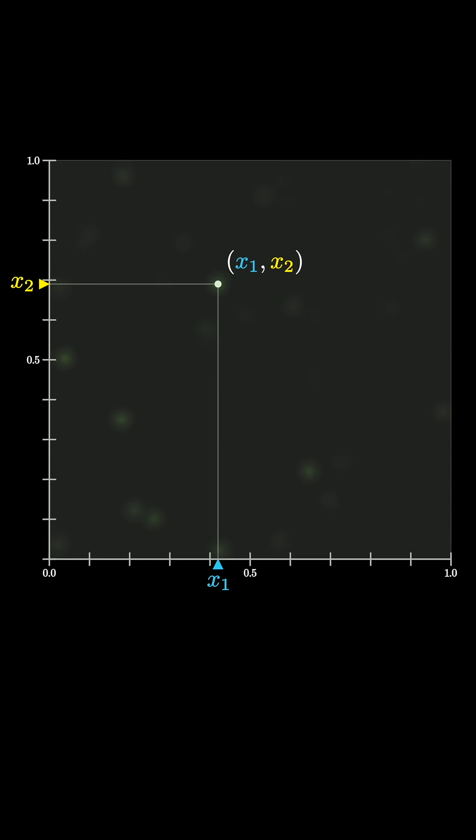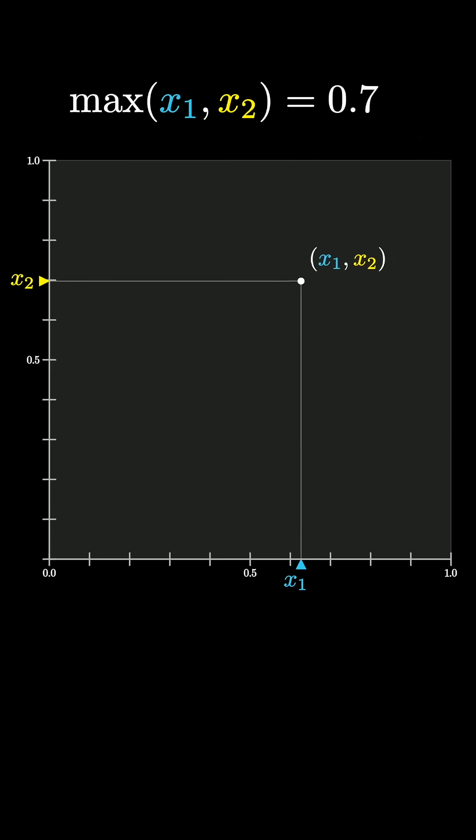So take a moment to think about what it looks like for the maximum of these two values to be a particular number, like 0.7. Well, either x1 is equal to that value and x2 is smaller than it, which puts you somewhere on this line, or x2 equals that value and x1 is smaller than that, putting you somewhere on this line.